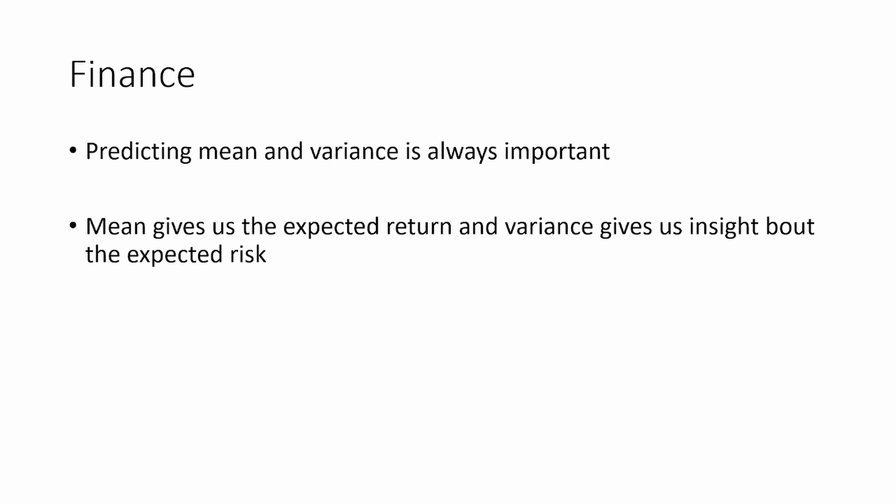Variance is the way to assess the uncertainty in the price movement of a given asset. The more the variance, the greater the risk. Mean gives us the expected return, whereas variance gives us insight about the expected risk. Both are important when you are investing or trading in an asset. It's very important to know the expected return and the expected risk in the future, even though that expectation itself carries uncertainty — predicting it well in advance is important before you invest your money.